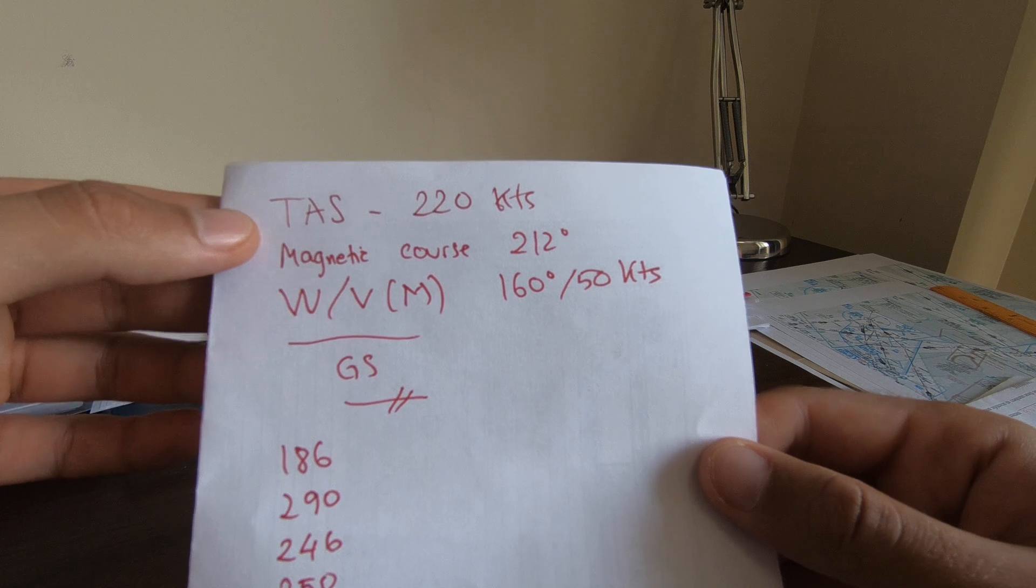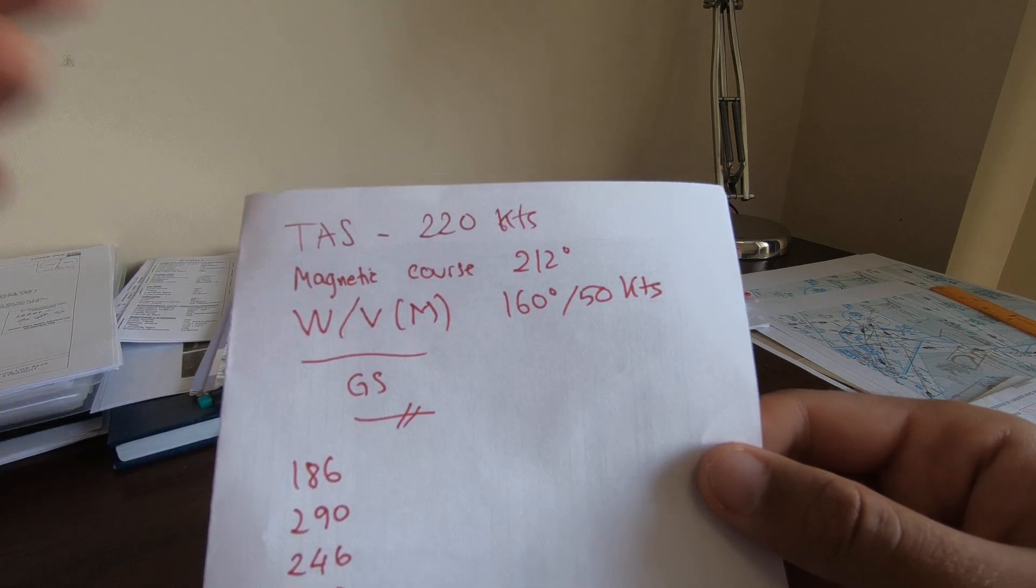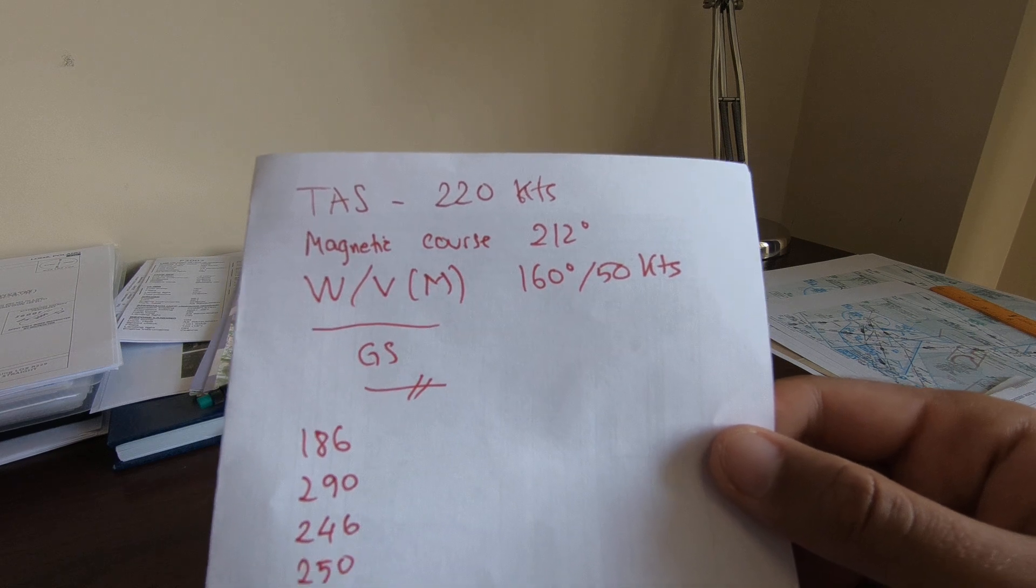The true airspeed is 220 knots, the magnetic course is 212, the wind is 160 with a speed of 50 knots, and what is the ground speed?